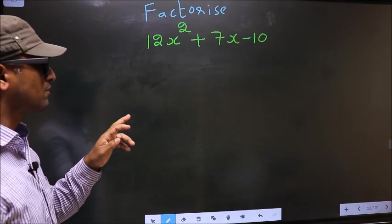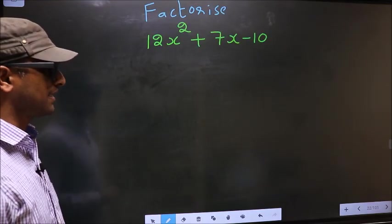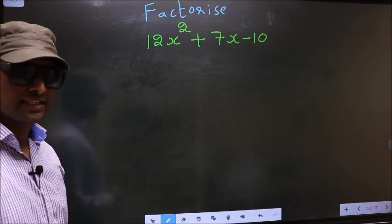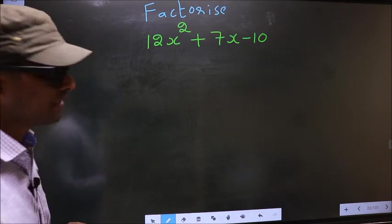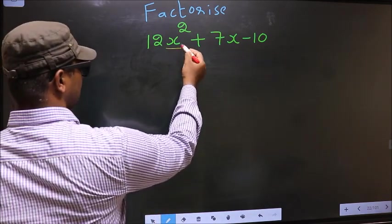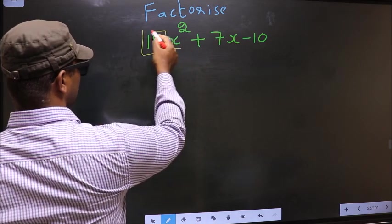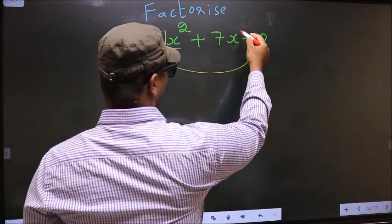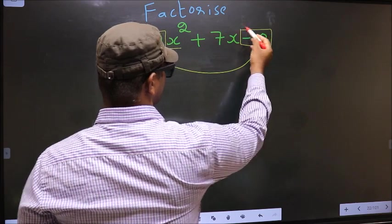Factorize 12x square plus 7x minus 10. To factorize, step 1: the coefficient of x square, that is 12 here, should be multiplied by the constant, that is minus 10.